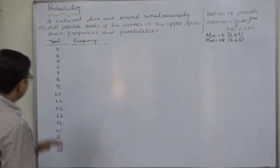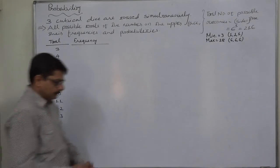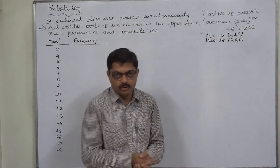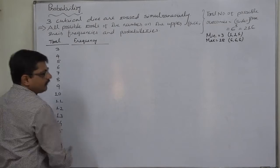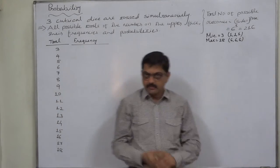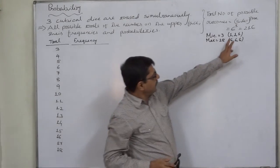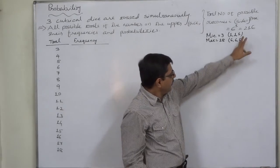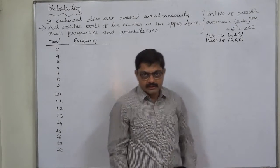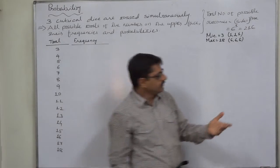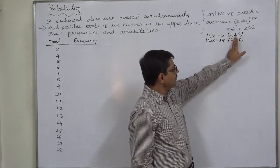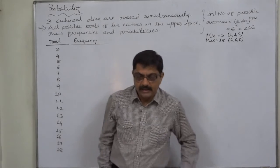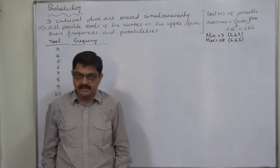There are 216 possible outcomes, but the summation will be one of these 16 possible totals. Now, what are these 216 possible outcomes? Even I cannot write all of them on this board, but there is a pattern. You can keep one on the first die, one on the second, and one, two, three, four, five, six on the third. This is the set of first six. The second set of six outcomes will be: keep one on the first die, keep two on the second die, and one, two, three, four, five, six on the third, and so on. There will be 36 such columns.